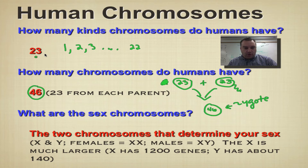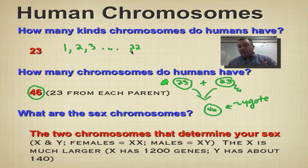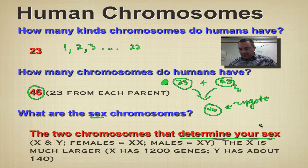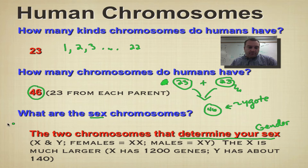We have 23 different kinds of chromosomes. The first 22 are one kind, but there's one more kind left — these are called the sex chromosomes. Sex chromosomes are going to determine your gender. So think of sex as gender — are you going to be a boy, or are you going to be a girl?